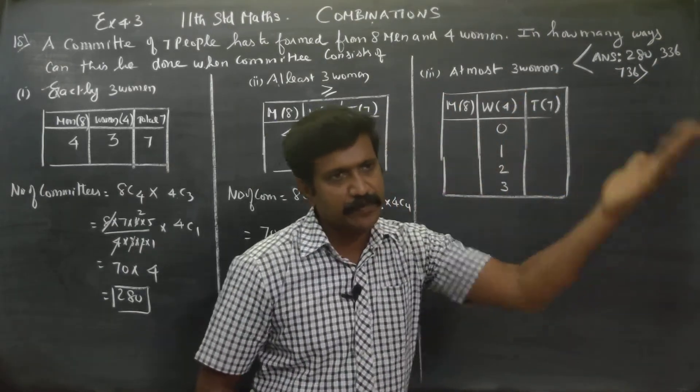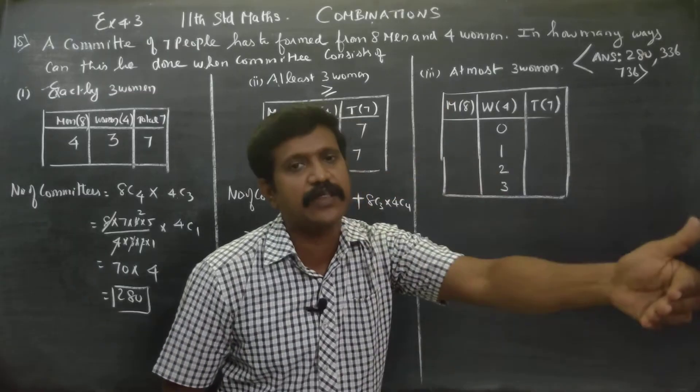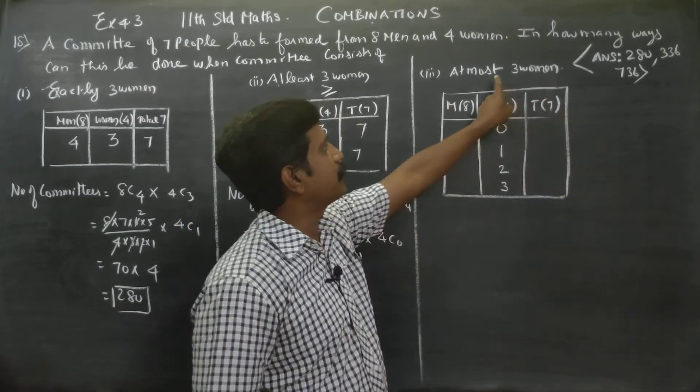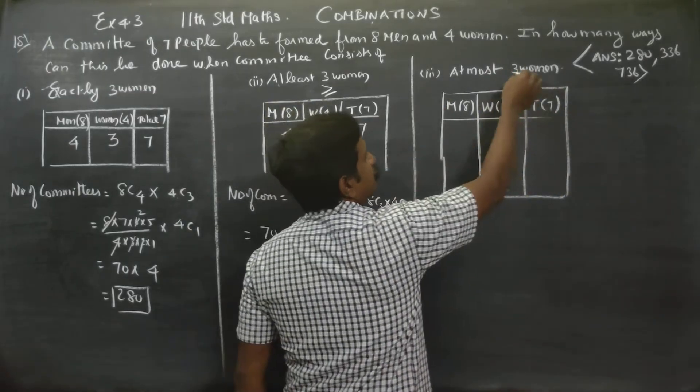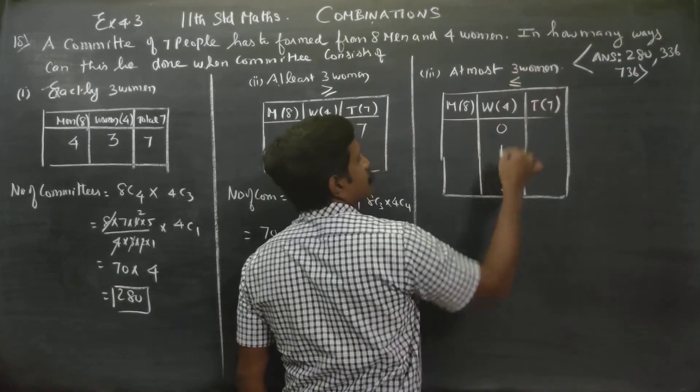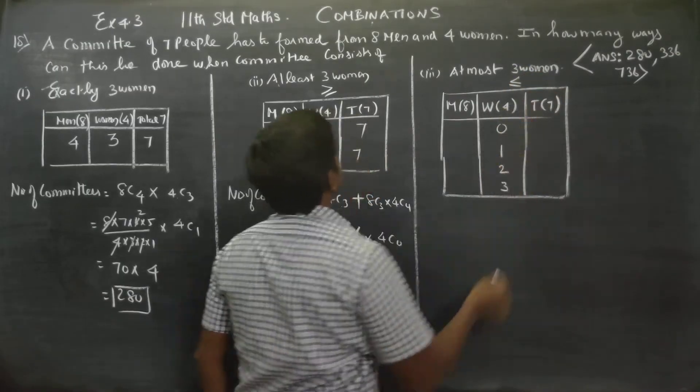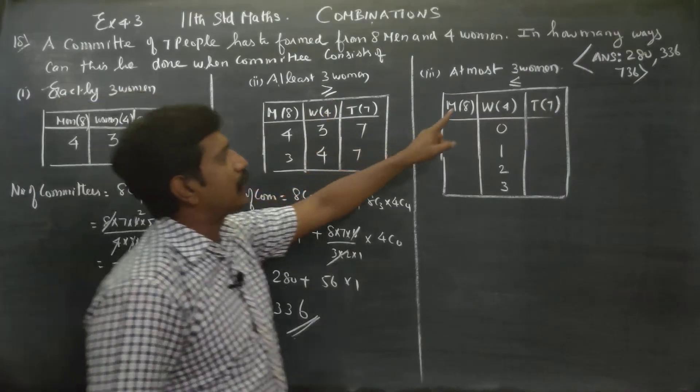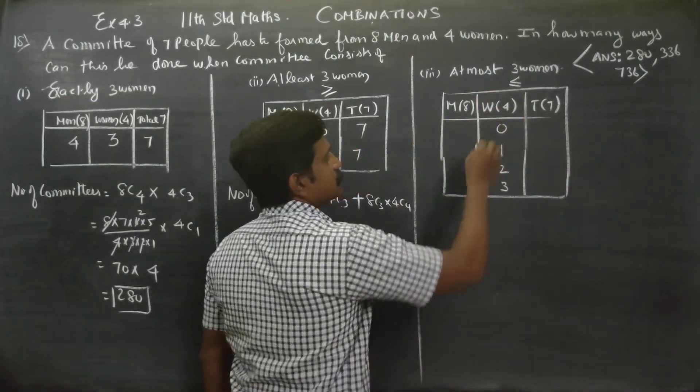At most 3 means maximum 3. Maximum 100 marks means 0 to 100, you can score. That is the meaning of maximum, at most. It means less than or equal to 3: 3, 2, 1, 0. At least means greater than or equal to. At most means less than or equal to.